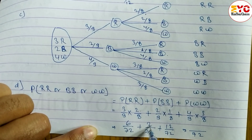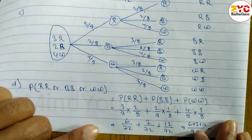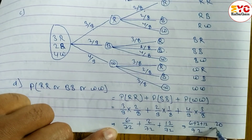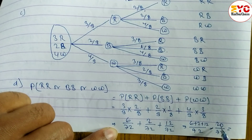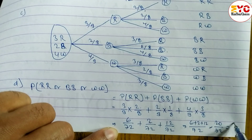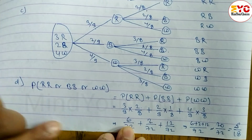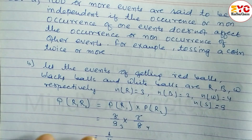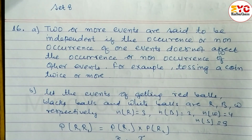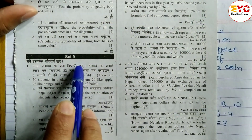Simplifying: 6/72 + 2/72 + 12/72 = 20/72 = 5/18. So the answer is 5 by 18. Hope you understand this question taken from Set 8, Question Number 16, Class 10 Probability. Please like and subscribe, and do not forget to share with your friends. Our next video will cover Set 9, Question Number 16.